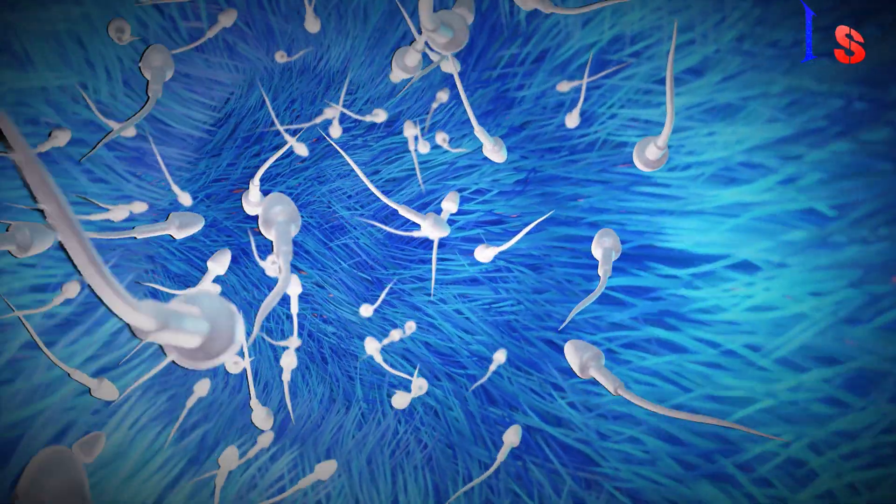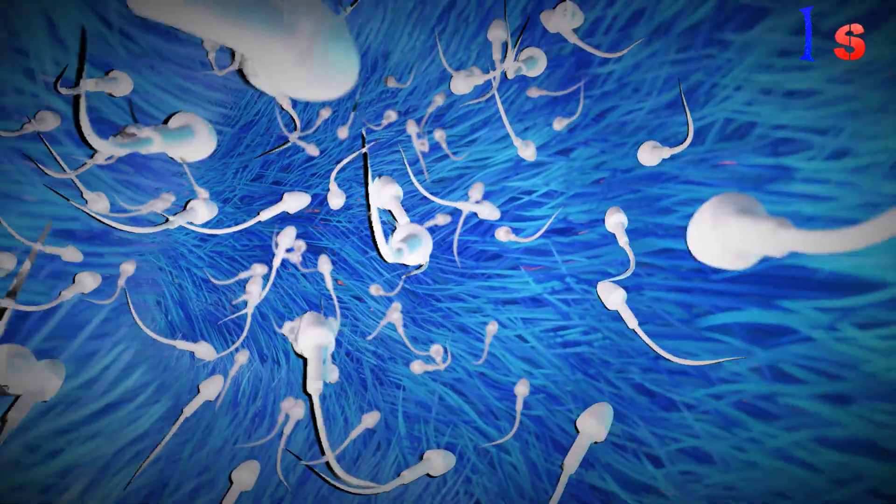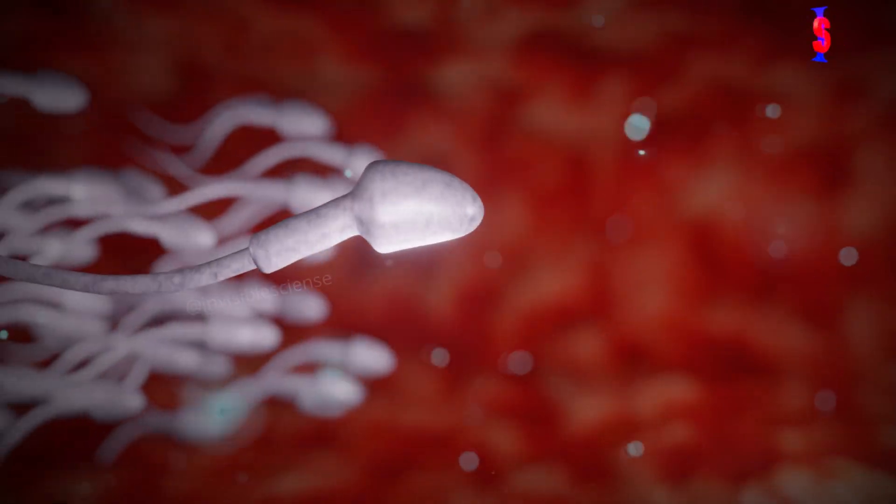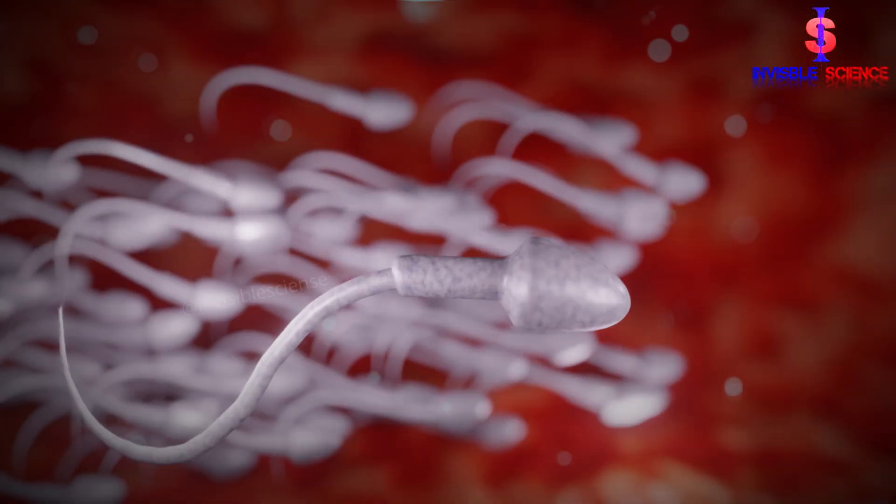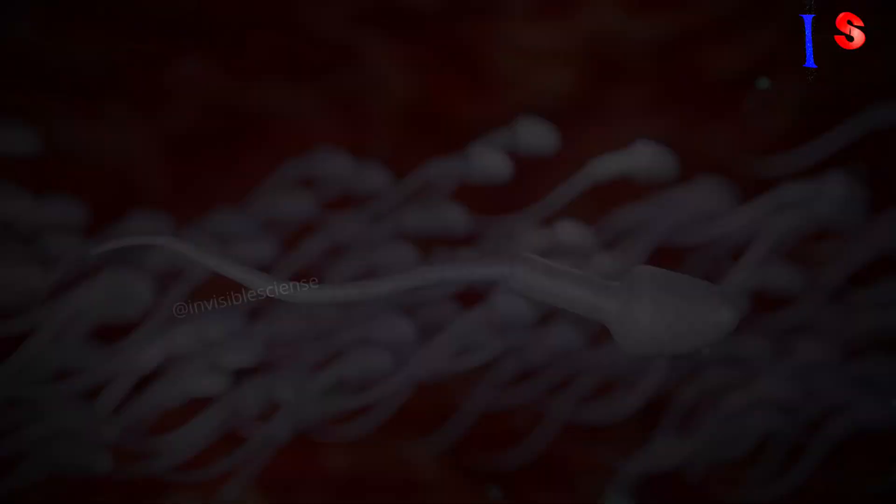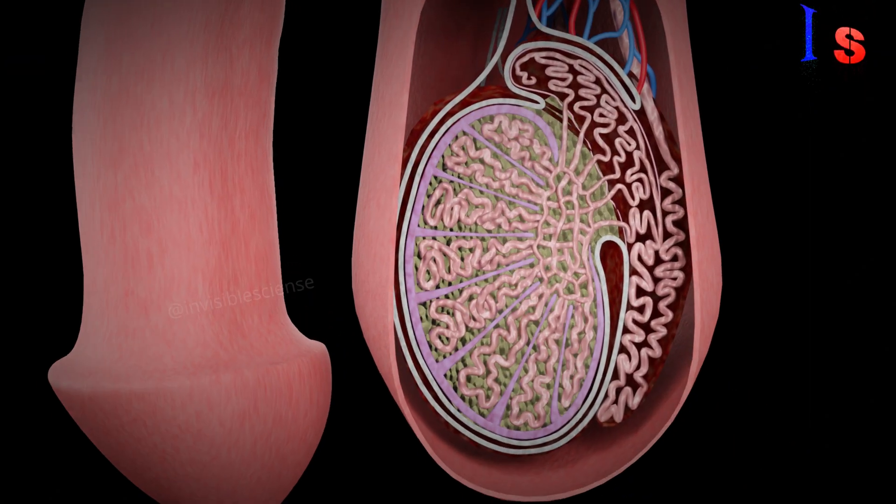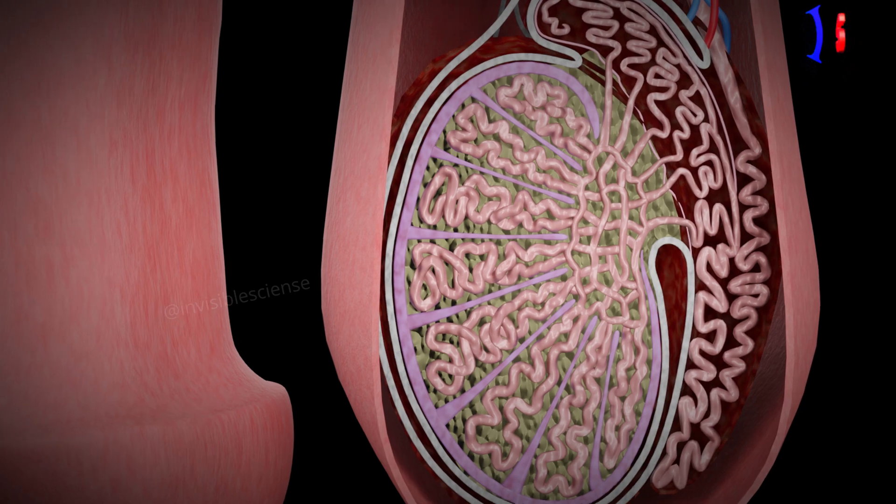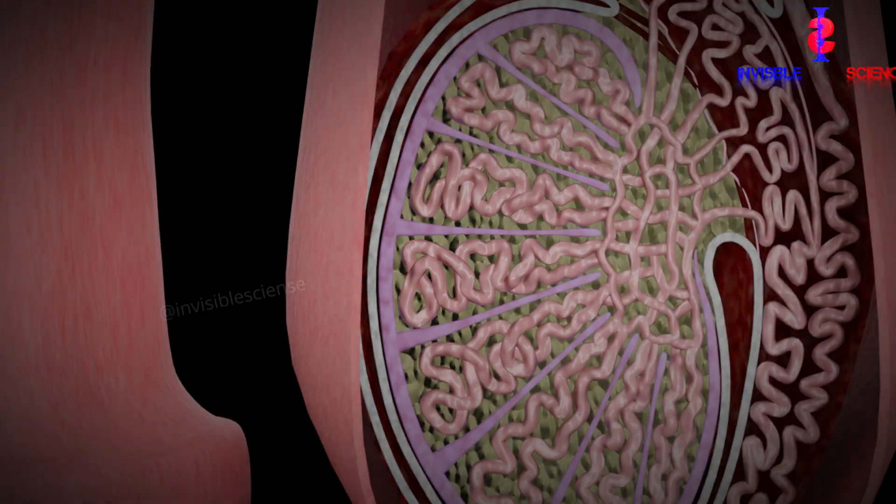Once a sperm cell is produced, it moves through the seminiferous tubule and into the epididymis, where it matures and becomes motile. The epididymis is a long, coiled tube that sits on top of the testes. It is responsible for storing and maturing sperm cells before they are ejaculated.